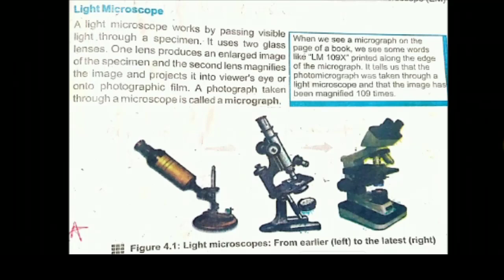Our next topic is the light microscope. A light microscope works by passing visible light through a specimen. A specimen is a sample of a substance taken for examination or study. There are basically two glass lenses in a light microscope — one lens produces an enlarged image and the second lens magnifies the image, which is then projected onto the viewer's eye or on a photographic film. A photograph taken through a microscope is called a micrograph.